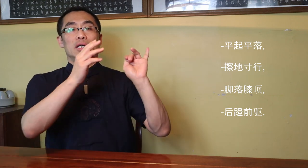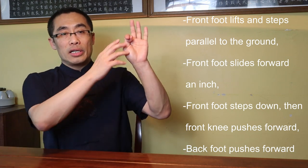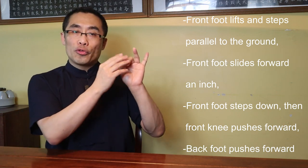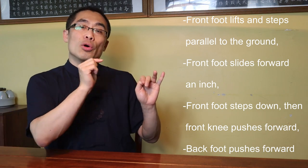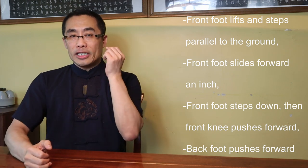Topic 4: Key Principles in Training. To help my students understand Bagua Tang Ni Bu better, I use four sentences to guide their practice. In Mandarin: Ping Qi Ping Luo, Cha Bi Cun Xing, Luo Jiao Qi Ling, Hou Deng Qian Qi. In English: 1. Front foot lifts and steps parallel to the ground. 2. Front foot slides forward an inch. 3. Front foot steps down, then front knee pushes forward. 4. Back foot pushes forward. Now let me explain one by one.